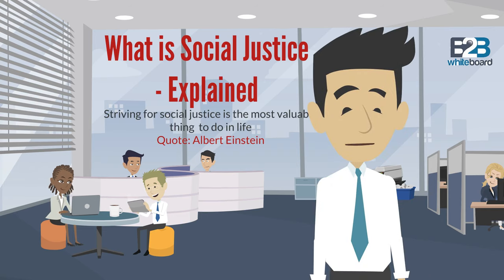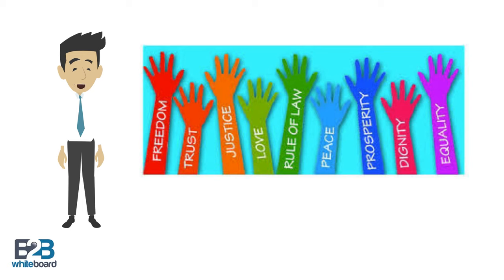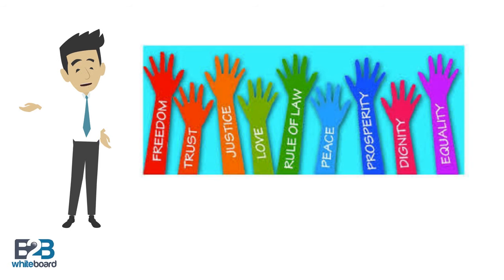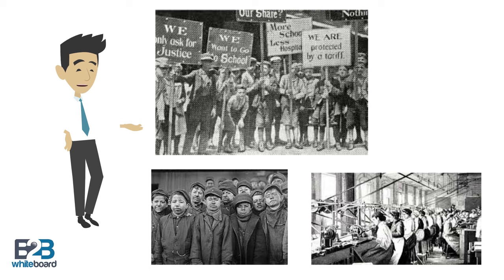Let me explain the term social justice. Social justice refers to a political and philosophical theory that focuses on the concept of fairness in relations between individuals and society and equal access to wealth, opportunities, and social privileges. The concept of social justice first arose in the 19th century during the Industrial Revolution as attempts